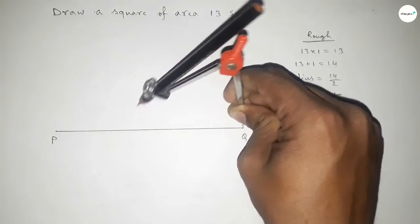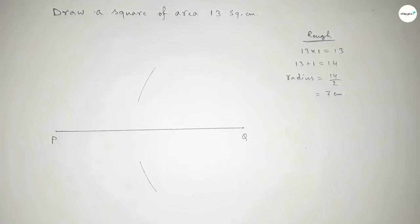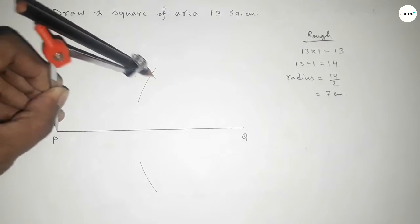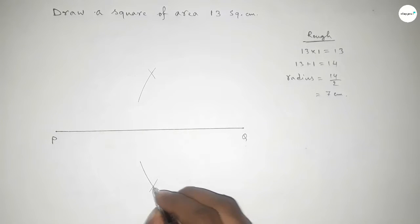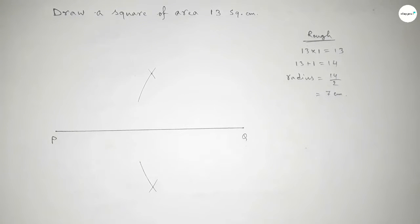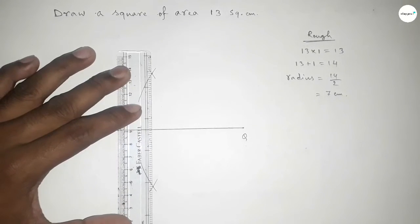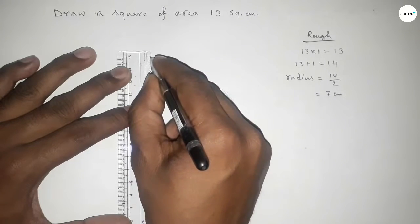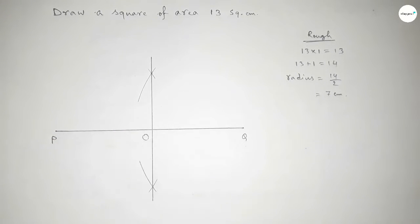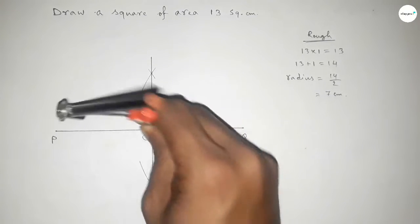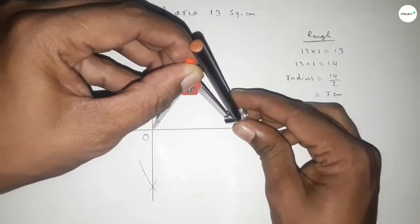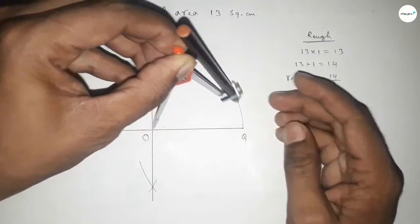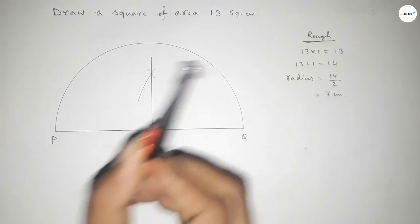Next, we bisect the line PQ. Taking greater than half of PQ, draw arcs from both ends with the same length, and they cut at two points. Joining those points bisects PQ at center O. Then, taking distance OP and OQ, we draw the semicircle with radius 7 centimeters.